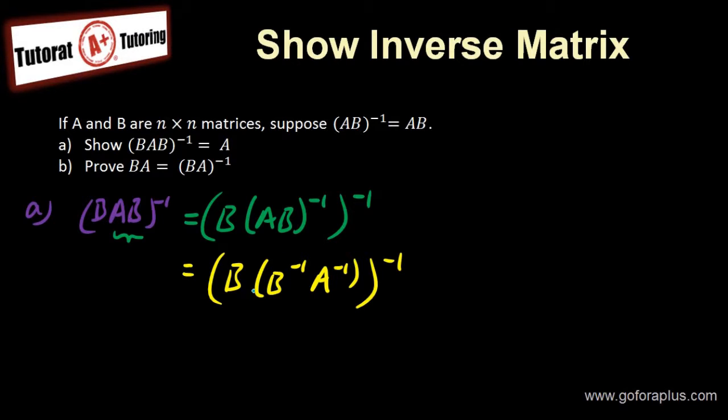Now that I have this, I can group this because this is all multiplication. So I can group B, B minus 1, A minus 1. So B times B minus 1, A minus 1, the whole thing minus 1. So I know that this part here is I.